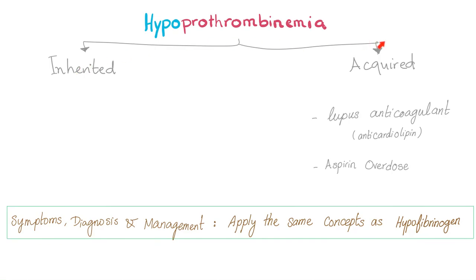Hypoprothrombinemia — inherited and acquired. This is factor 2. Inherited is inborn. Acquired causes include lupus anticoagulant and aspirin overdose. For symptoms, diagnosis, and management, apply the same concepts we learned in hypofibrinogenemia. By the way, no matter how many textbooks you read, hypoprothrombinemia is rarely mentioned.